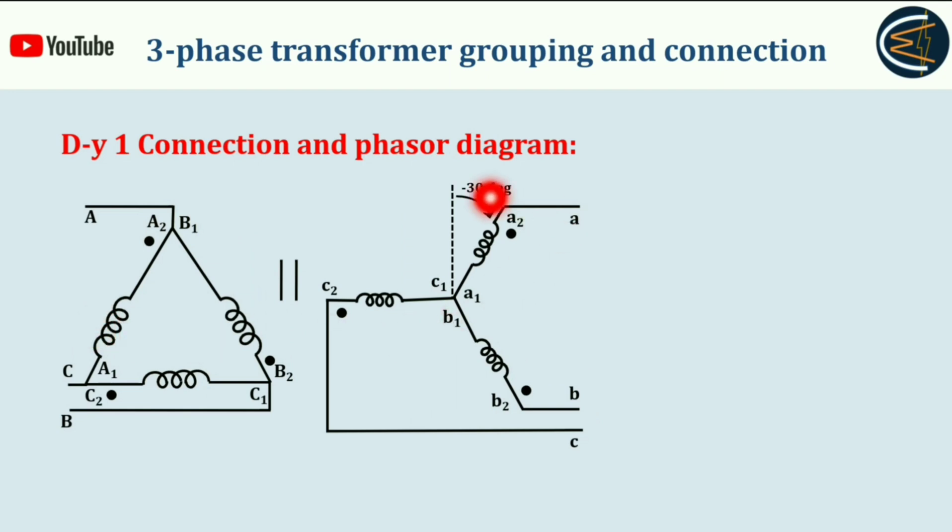side is delta connected, secondary side is star connected. As you can see here, there is minus 30 degree phase shift, or a clockwise phase shift, in order to make the individual phases parallel. See here, A phase